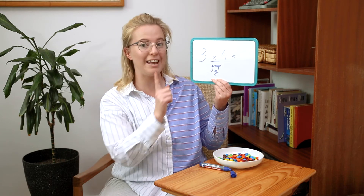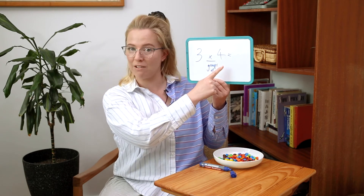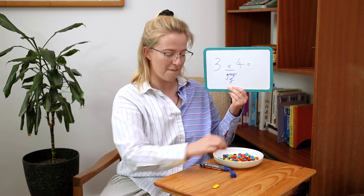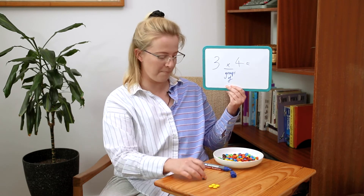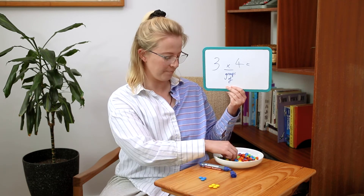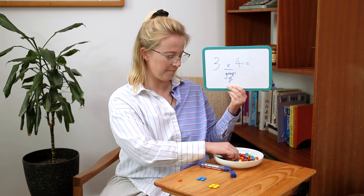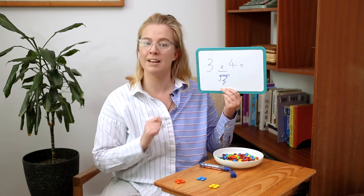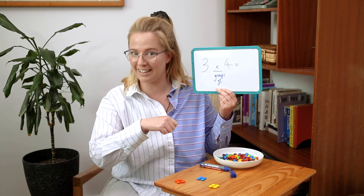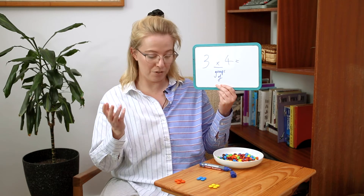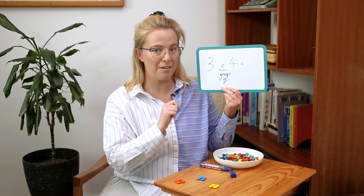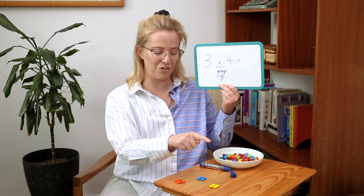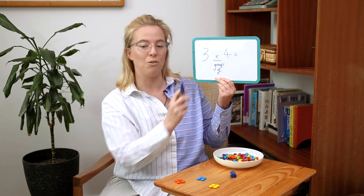Here is our next equation: three times four, or three groups of four, which means I need three groups with four counters in each group, so we're going to need three different colors. Now we have three groups and there are four counters in each group. If you're good at skip counting, you could just count four, eight, twelve. But if you need to, we can count them all one at a time: one through twelve. So three times four, or three groups of four, is twelve.